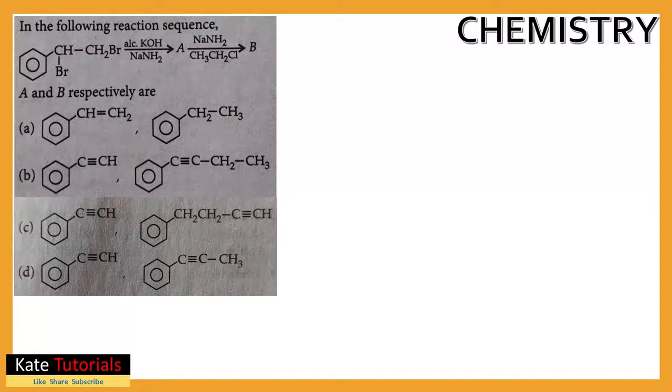The sequence of reactions from this molecule: if we add alcoholic NaOH we'll get A, and after adding this reagent we'll get B. They have given options A, B, C, D with A at left and B at right. We have to choose the correct option from these four options.